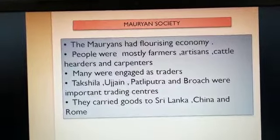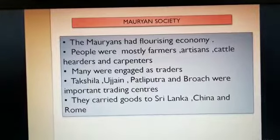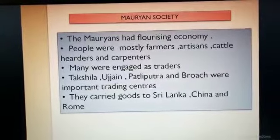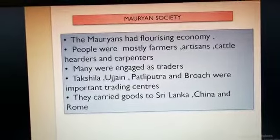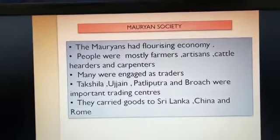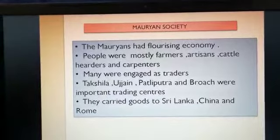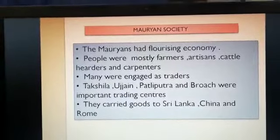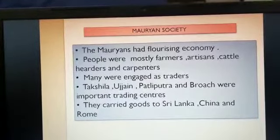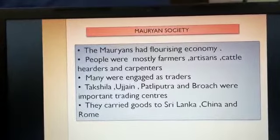Takshila, Ujjain, Patliputra and Broach were the important trading centers. These were the places from which mainly buying, selling and all market activity was done. They carried goods to Sri Lanka, China, Egypt and Rome.